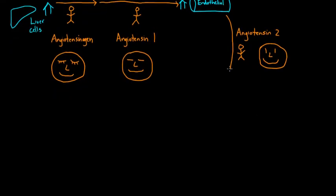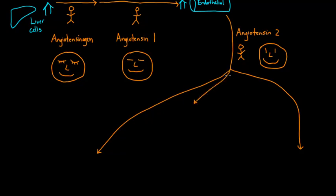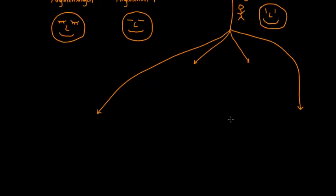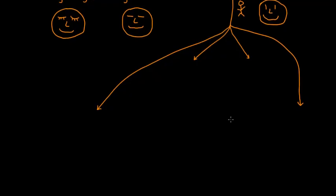Angiotensin 2 will go out to a number of different places. It goes to four places, and four different cell types are affected by angiotensin 2. Keep in mind, at the beginning of all this, we're trying to raise blood pressure. So just keep that thought in your head.